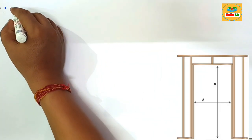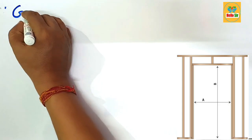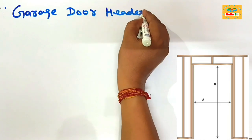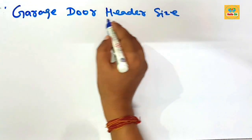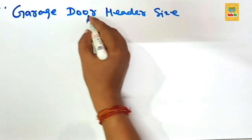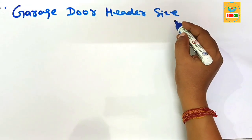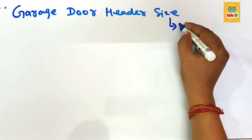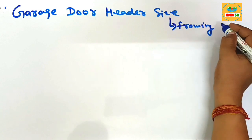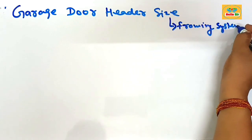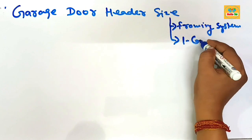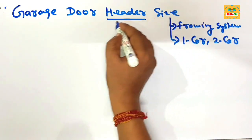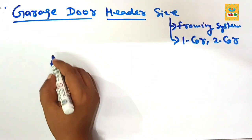Hey guys, today in this video you will learn about the garage door header size. You have to find out the header size for a garage door required for one car storage and two car storage. In the garage door framing system, it is used to store one car and two cars, and you have to find out the header size required for the garage door.